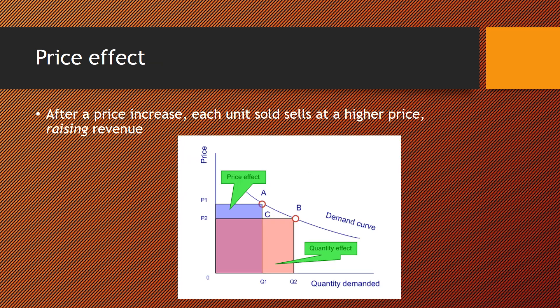We have two things happening simultaneously: a price effect and a quantity effect. The price effect — looking at our model, moving from point B to point A means the price has gone up from P2 to P1. With the price effect, we only care about what happened to the price. Because the price went up, each unit sold is now selling at a higher price. So the price effect suggests that a higher price should increase revenue, and conversely, a lower price should decrease revenue.